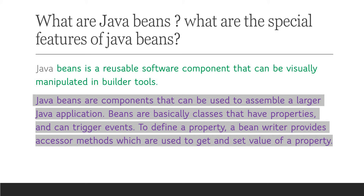JavaBeans. What are the special features of JavaBeans? JavaBeans is a reusable software component that can be visually manipulated in builder tools. JavaBeans are components that can be used to assemble a larger Java application. Beans are basically classes that have properties and can trigger events.